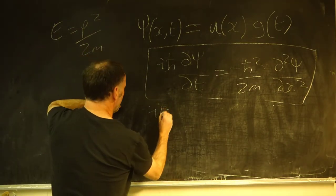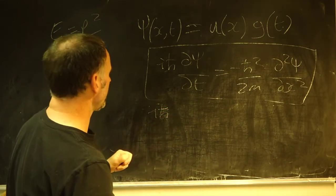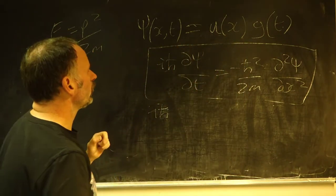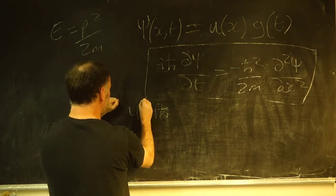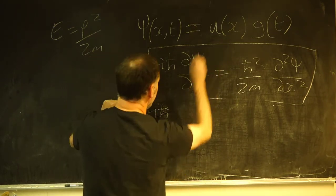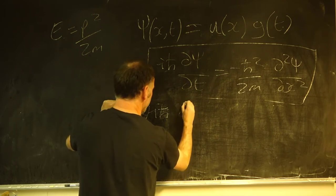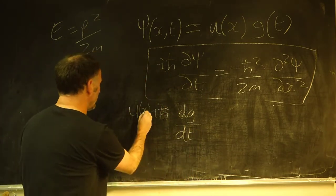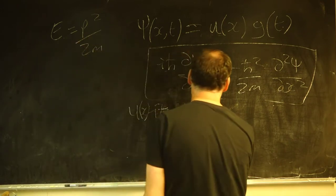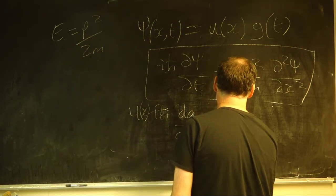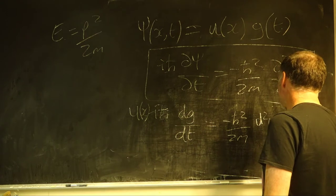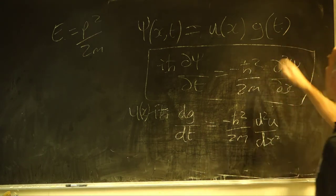So, we have iℏ dψ/dt, which means we will have, this only depends on x, so the only thing, so that's going to be a constant. So let's bring that out this side. And then we've got d, and it's going to be, because g only depends on t. And on this side, we're going to have minus ℏ²/2m d²ψ/dx², so we're going to have d²u/dx², and then we're going to have, that's just going to be a constant.